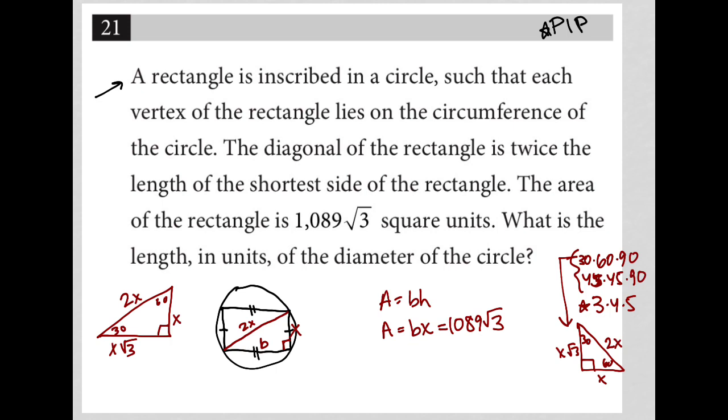So that's just giving you some insight on how I knew that this would be X√3 right here. That means my base is X√3. So I'm going to say area is equal to the base which is X√3 times the height which is X, which we know is equal to 1089√3.